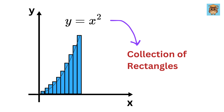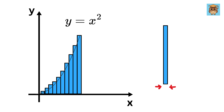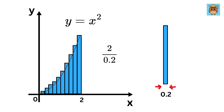For example, I can approximate this parabola as a collection of these rectangles. Assume each of them has a width of 0.2. So how many of these rectangles will be needed if our parabola extends till X equals 2? We need 2 over 0.2, or 10 such rectangles. And these X values will be 0.2, 0.4, 0.6, and so on till X equals 2.